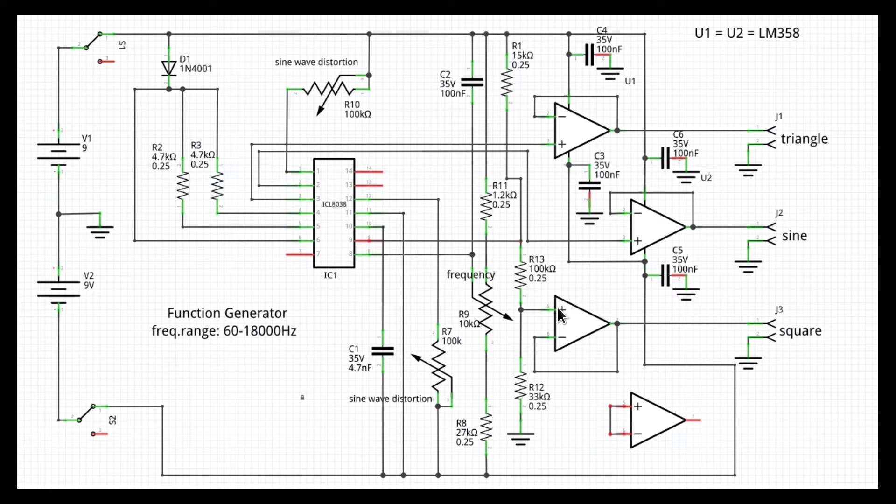The voltage divider reduces the amplitude of the square wave by a factor of 3. And this is necessary for two reasons. First, the output has a level much higher than those of the sine and triangular waves. The voltage divider, this way, makes the amplitude more similar.